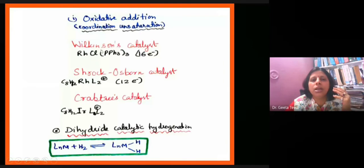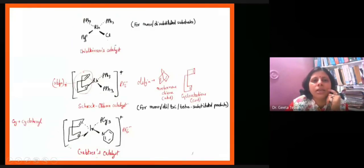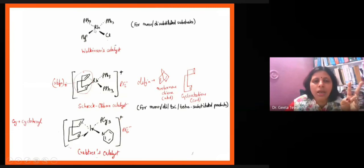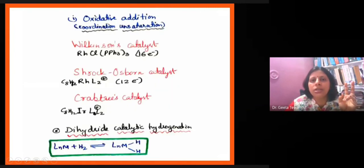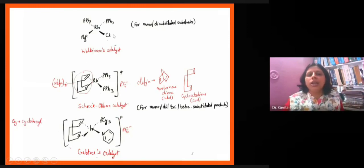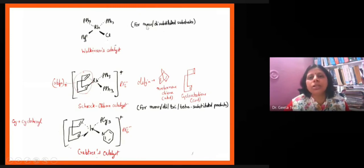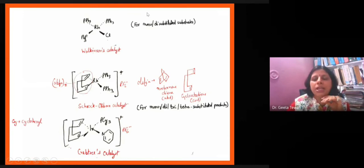Now if we look at oxidative addition, there are three catalysts: Wilkinson, Schrock-Osborn, and Crabtree. The Wilkinson catalyst is a rhodium complex with three PPh₃ groups and one chloride group — it is a tetra-coordinated species and is not an 18-electron species, making it coordinatively unsaturated. This is why oxidative addition can occur. It acts on mono- and di-substituted olefins.